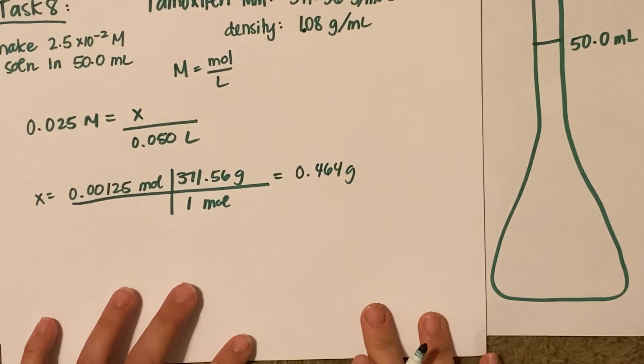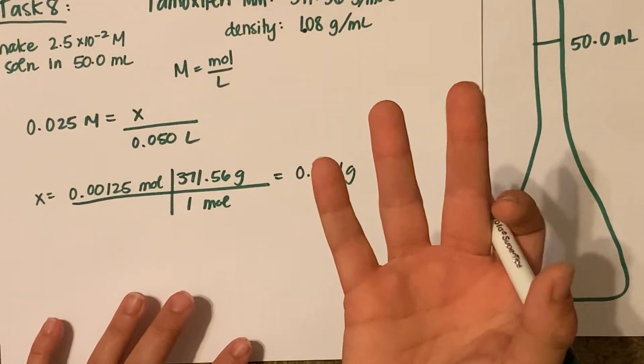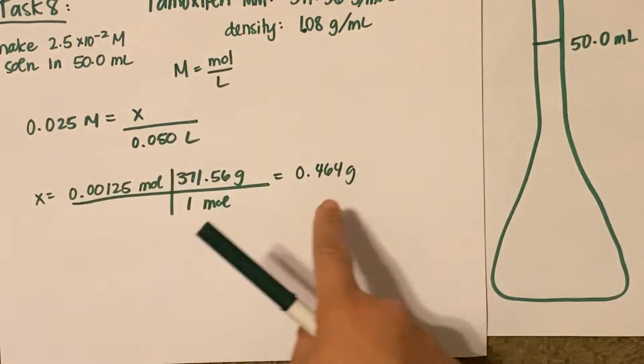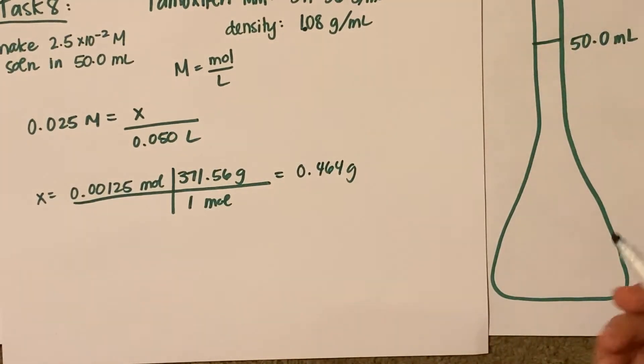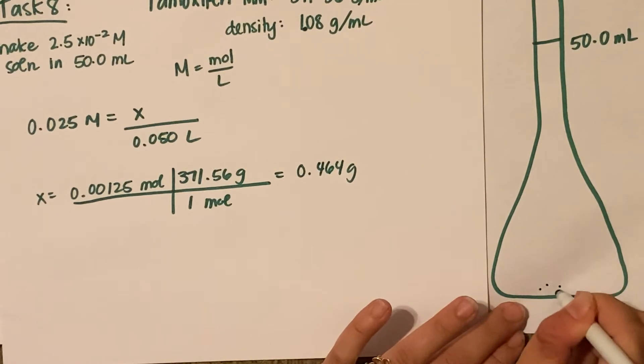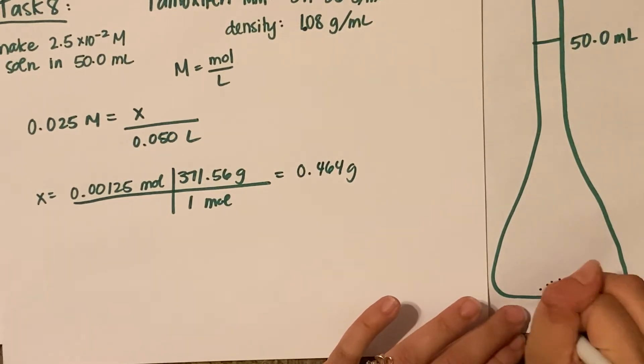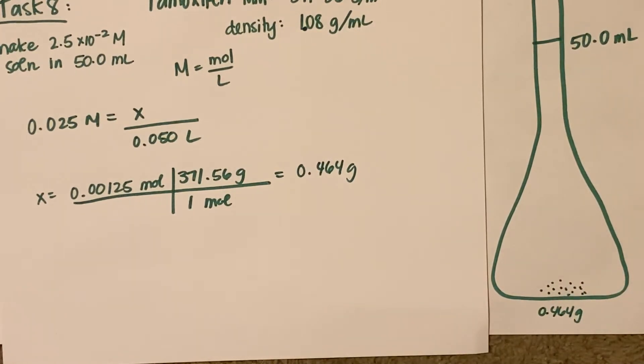If you can imagine, I have my tamoxifen, go over to my scale, weigh out exactly 0.464 grams, and then add it to my volumetric flask. That's my 0.464 grams of tamoxifen that I've added to the flask.